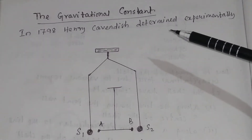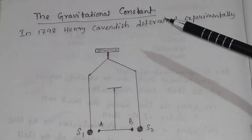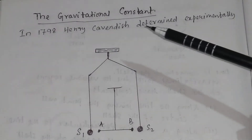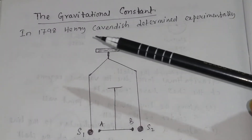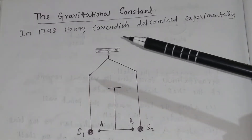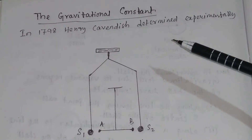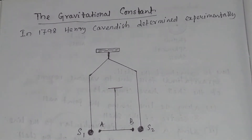In this video, we will discuss the gravitational constant. In 1798, Cavendish determined the gravitational constant experimentally.